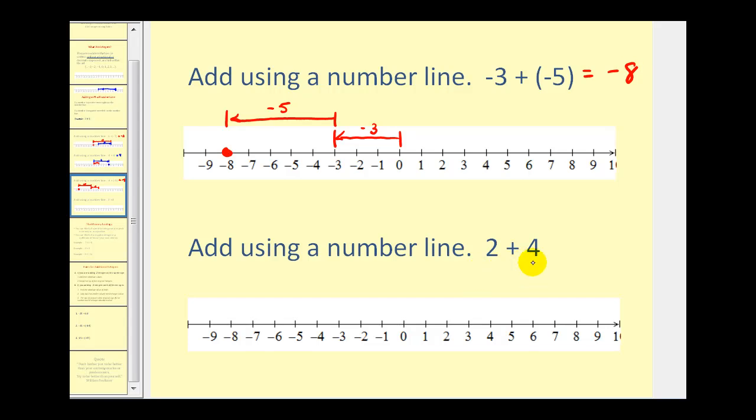Now in this last example, we probably already know the sum is equal to six. But to model this on the number line, we would start at zero, move to the right two units, and then move to the right four more units. So our sum would be positive six.